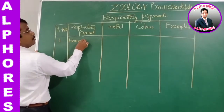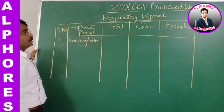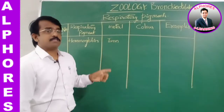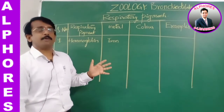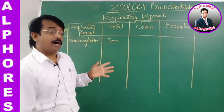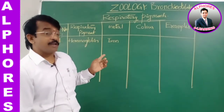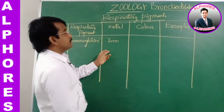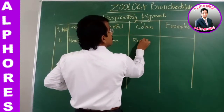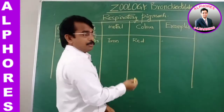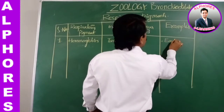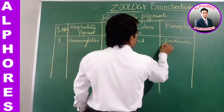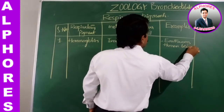Hemoglobin is a respiratory pigment with the metal iron. Recall that hemoglobin is a tetramer with four polypeptide chains, each carrying iron, and each iron molecule carries oxygen. Hemoglobin is red colored. Examples include annelids like earthworms and human beings.